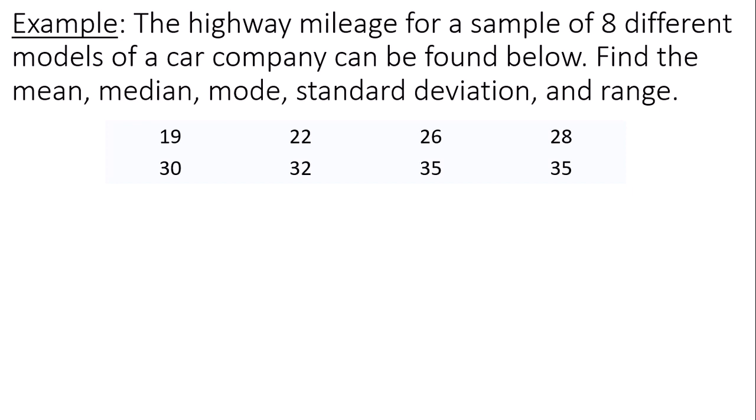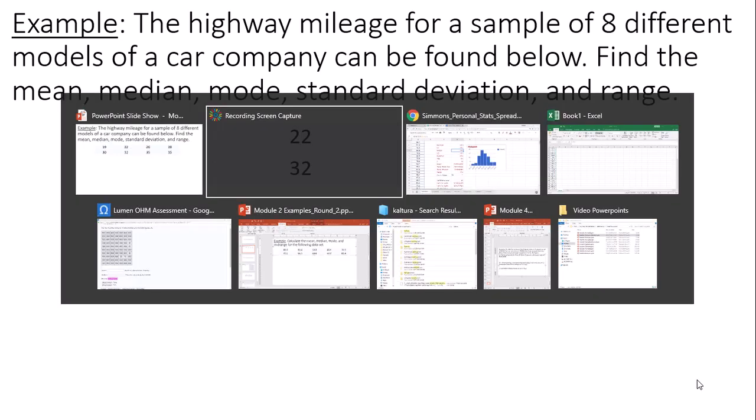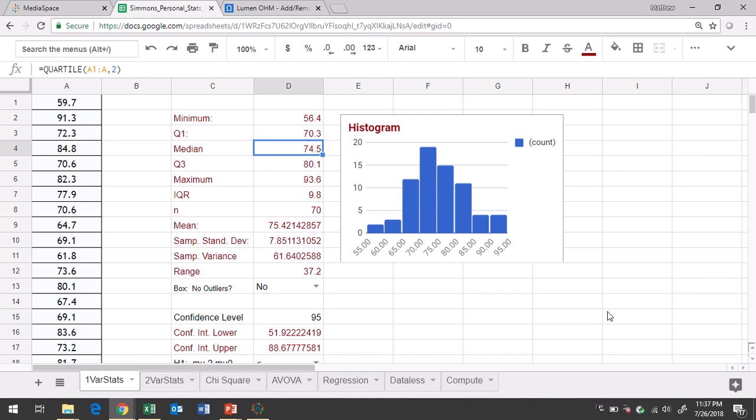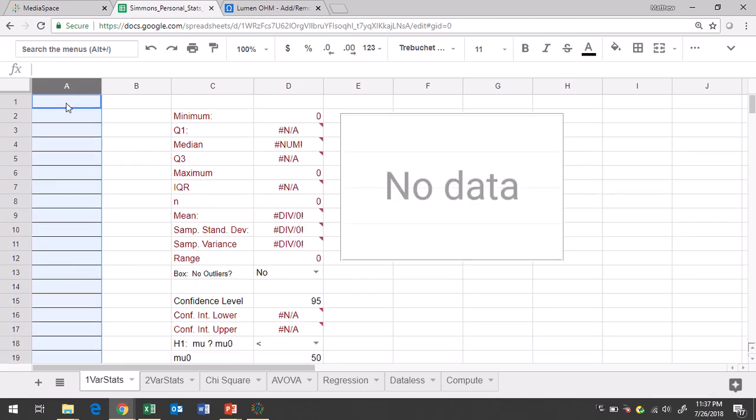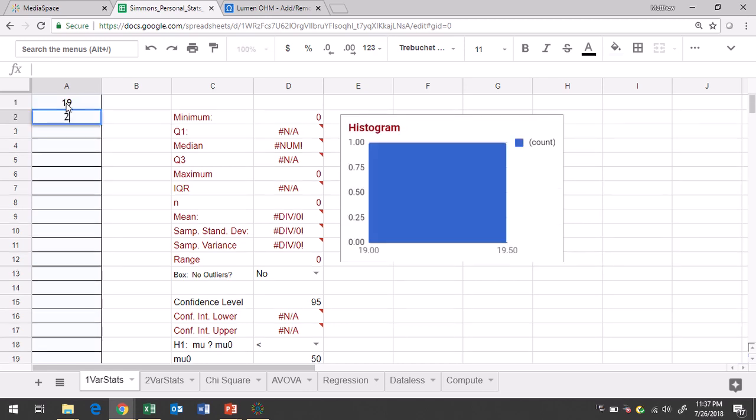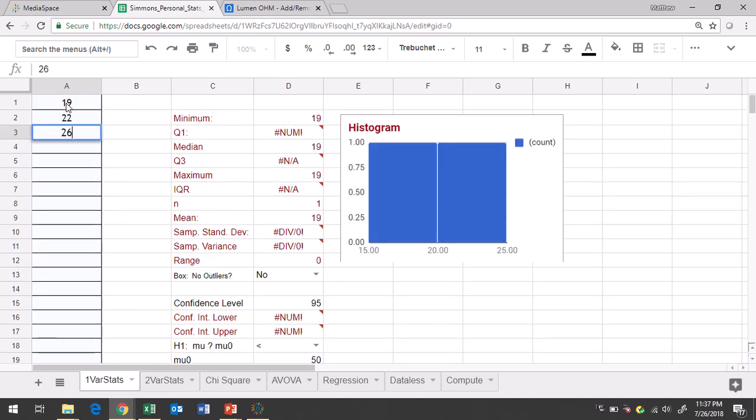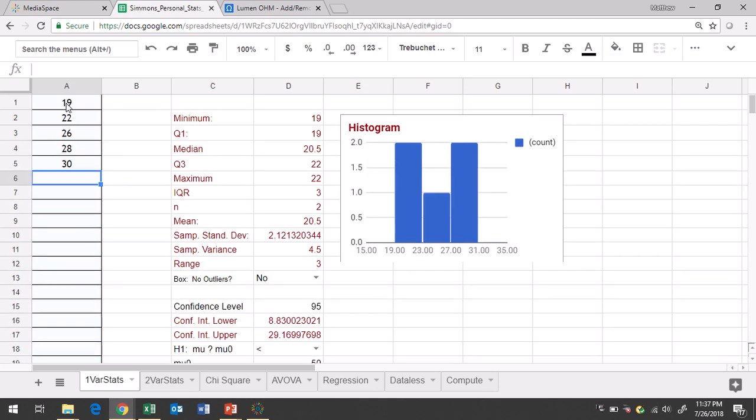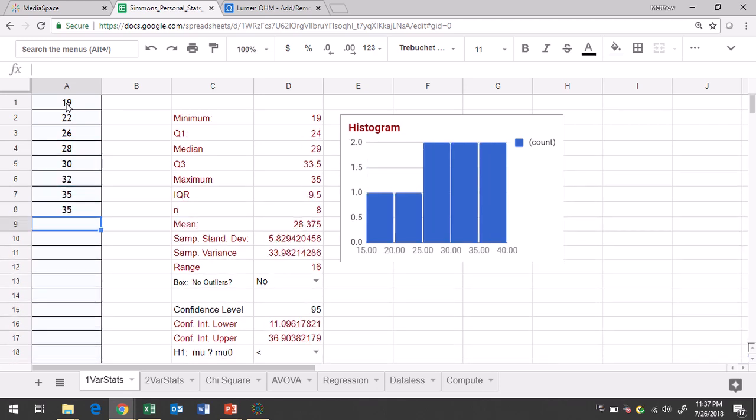So the easiest way to do this is just to take our eight data values here and type them into Google Sheets. When you get to Google Sheets, you're under the one variable stats tab. You want to clear out column A, so just click column A and click the delete button. It clears it out for you. And then this is a small data set, so just type in your eight data values. You can do whatever order you would please, it's not really that big of a deal.